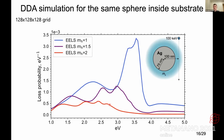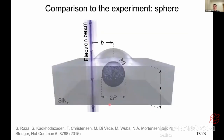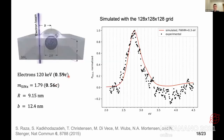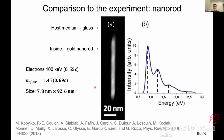This shows how plasmon peaks are shifted when a medium surrounds the particle. Comparing theory and simulation to experiments: this is from Raza et al. 2015 for silver nanospheres placed inside silicon nitride, with electrons at 120 kilo-electron-volts (0.59c), faster than the speed of light in silicon nitride — so Cherenkov radiation is present. The dots are experimental results and the red line is the simulation using the new general theory. The plasmon peak is in good agreement with the experimental one.